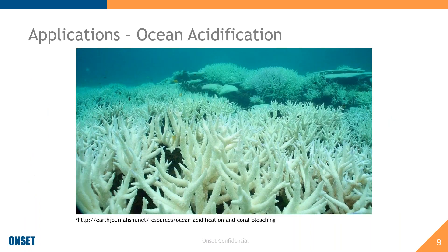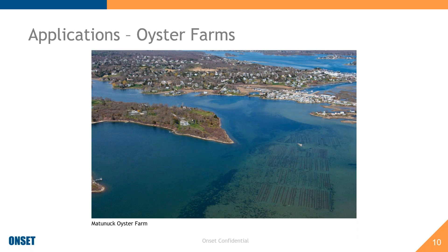Getting into applications: a very common application is studying ocean acidification. We have cases of the MX2501 being used to study corals and the effect of ocean acidification on them. Locally, oyster farming is quite common in this area. pH loggers are used to check and ensure pH levels are maintained within an acceptable range, especially after periods of heavy rain, which can affect the pH of the waters where these are farmed. Harvesting oysters in water with bad pH can lead to bad oysters and bad news for the consumer.